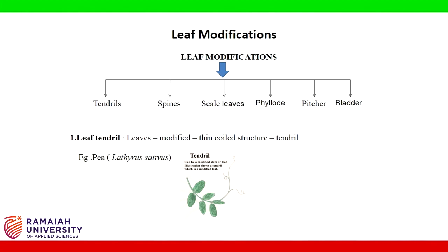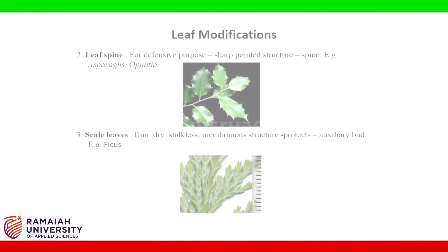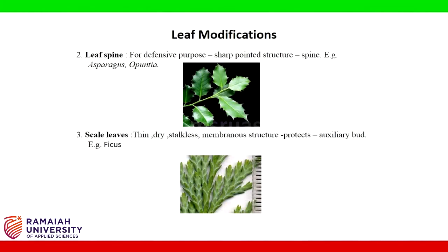Leaf tendril: leaves are modified into a thin coiled structure called a tendril. Example: pea. Leaf spine: for defensive purposes, the leaf forms a sharp pointed structure called a spine. Examples: Asparagus, Opuntia.